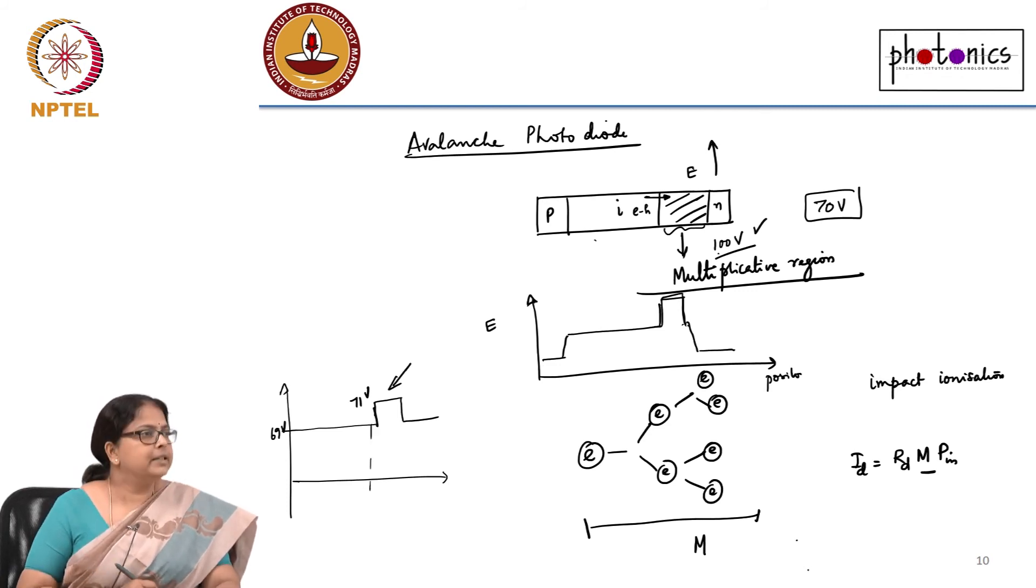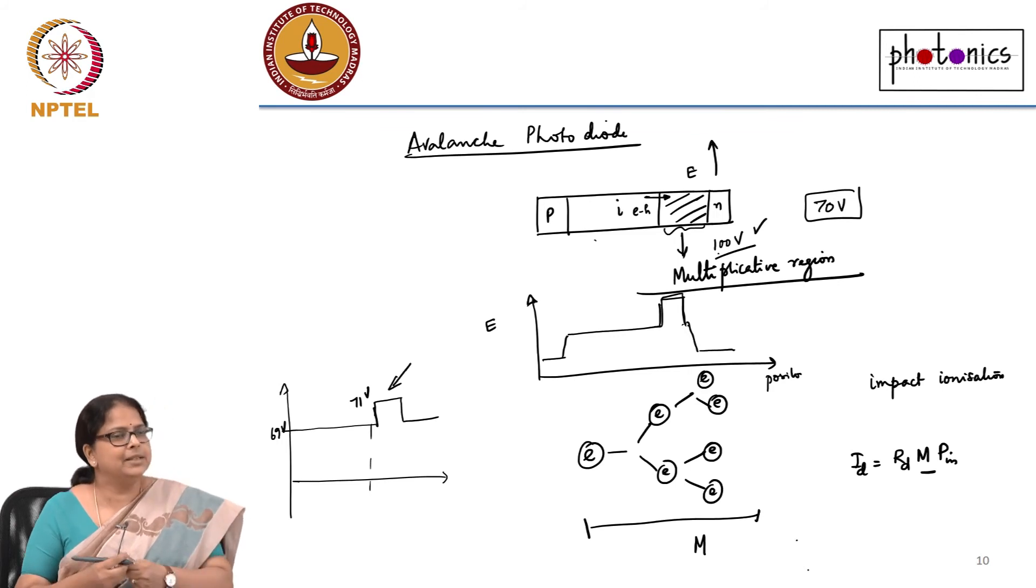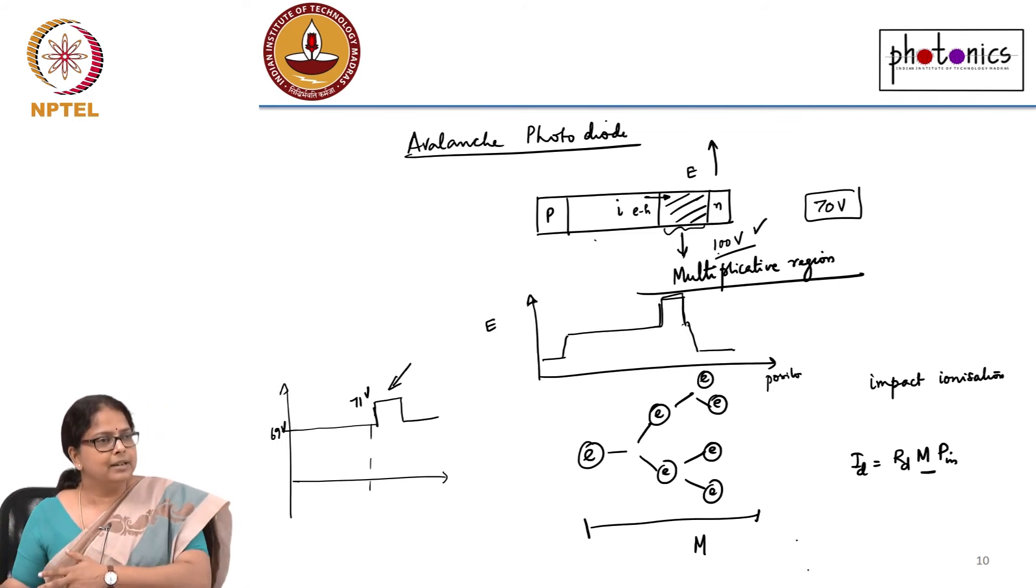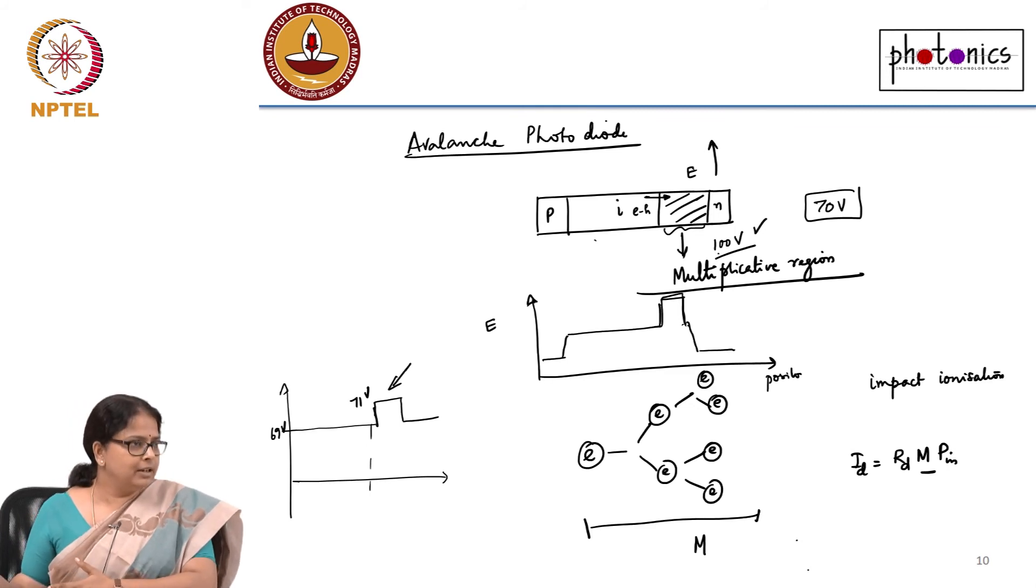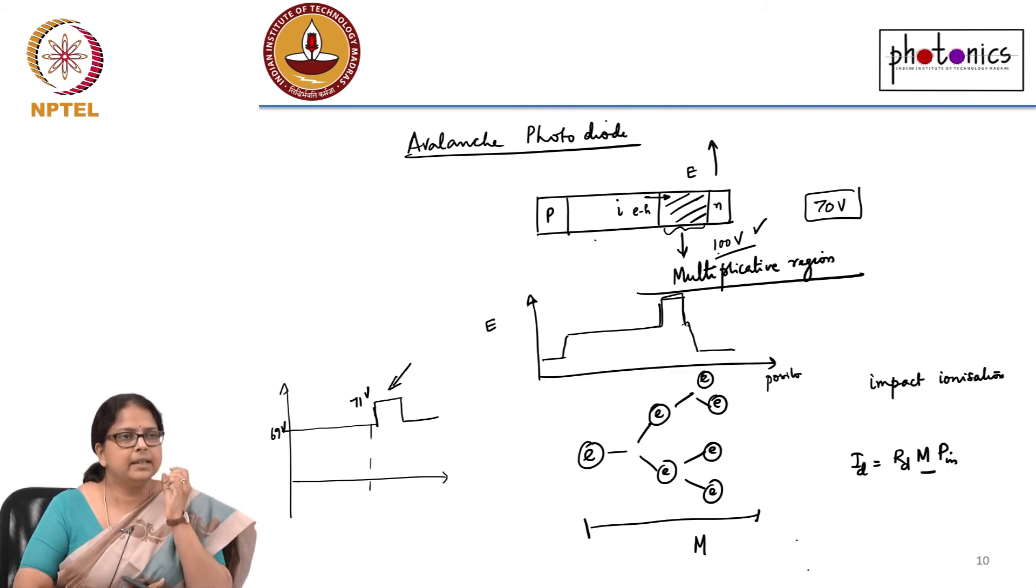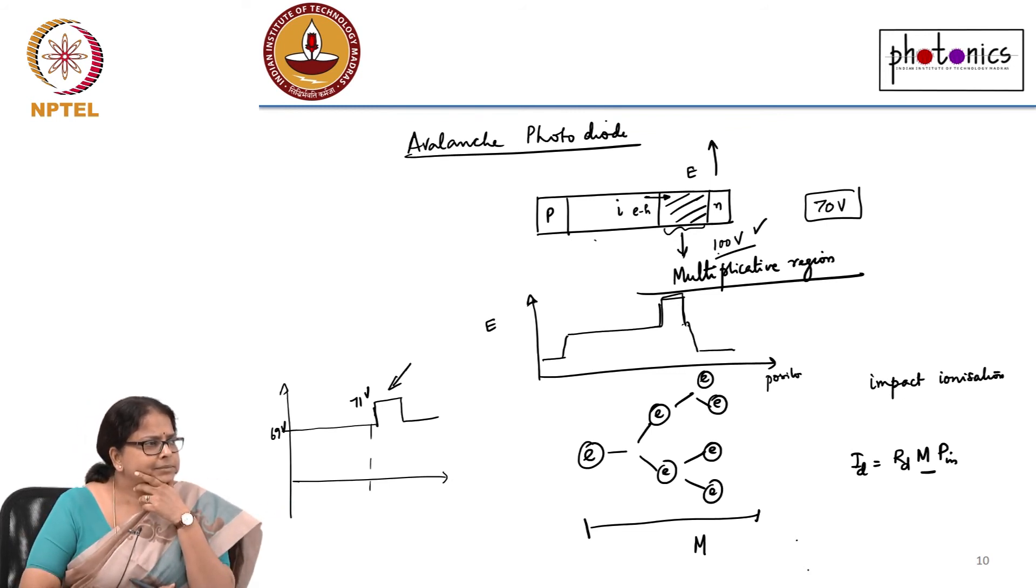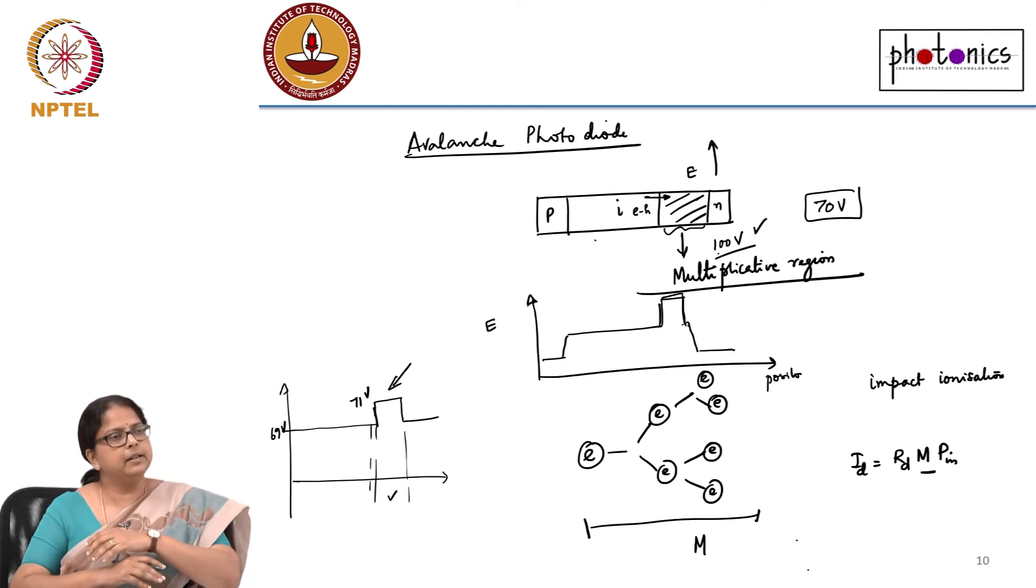This is called gated operation of avalanche photodiode. You gate it based on the arrival time of the photon and when the photon arrives there is an electron hole pair generated, but that electron is now experiencing this multiplicative gain. You will definitely detect that single photon in the circuit. APDs are very well used for single photon detections in the gated. Why cannot I, why do I need this gated detection? Why cannot I keep it on all the time? I know that the photons are generated, the photon is coming in only at this time. Why cannot I keep the reverse voltage more than 70 volt all the time?